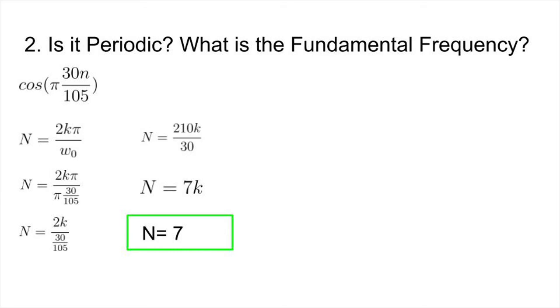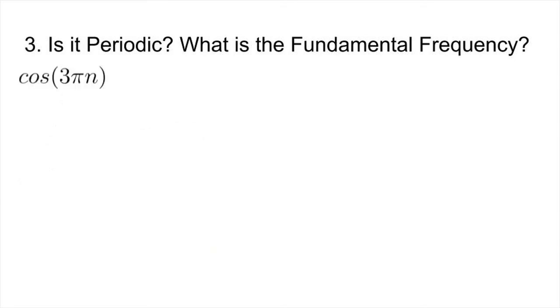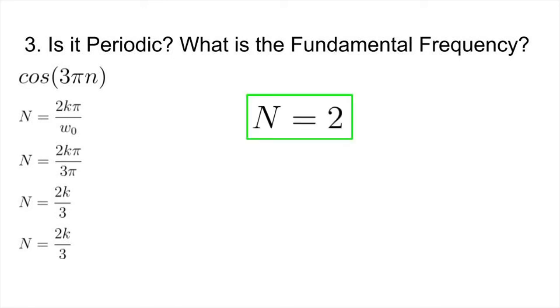Onto the third problem, and you can start to see where this is going. We will use the same equation for this, and we get N = 2kπ/ω₀. We will plug in what we know for ω₀, and we have N = 2kπ/3π. Canceling out the π's, we get 2k/3, and this is what we end up with. We can't simplify further, so our answer turns out to be N = 2, and our fundamental frequency is 1/2.